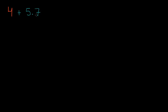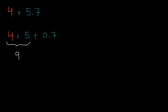The way that my brain tries to tackle this is I try to separate the whole numbers from the tenths. So you can view this as being the same thing as four plus five plus seven tenths. All I did here is I broke up the five and seven tenths into five plus seven tenths. Because I can then say four plus five is just going to be equal to nine, and then I just have to add the seven tenths. So it's gonna be nine and seven tenths, which I can rewrite as 9.7.